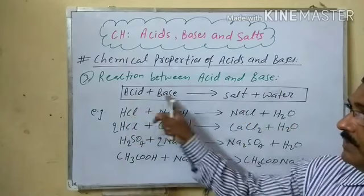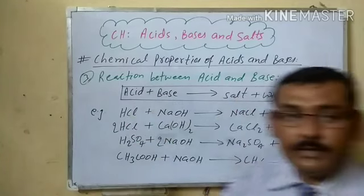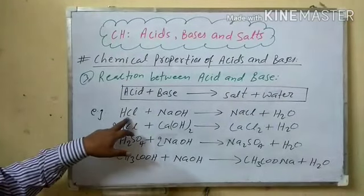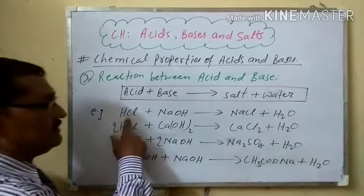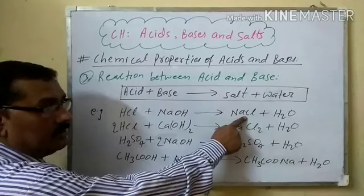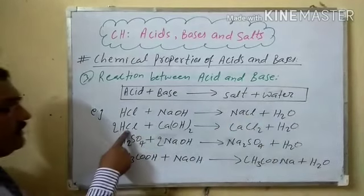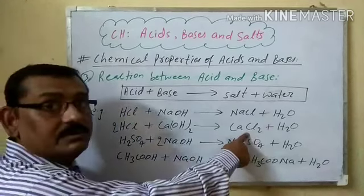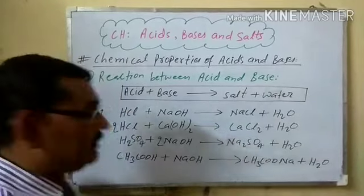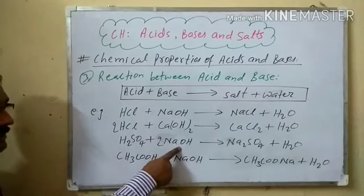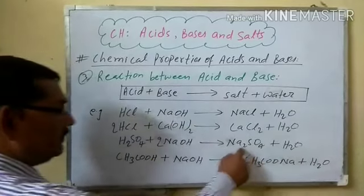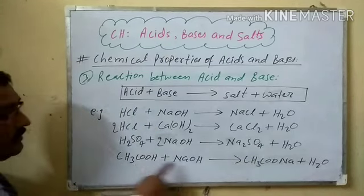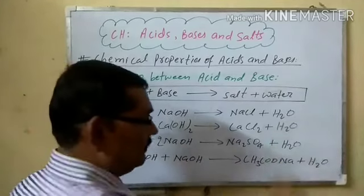You can take any acid and any base. For example: hydrochloric acid plus sodium hydroxide gives NaCl (salt) and water. Hydrochloric acid plus calcium hydroxide gives calcium chloride (salt) and water. Sulfuric acid plus sodium hydroxide gives sodium sulfate (Na2SO4) and water. Acetic acid plus sodium hydroxide gives sodium acetate and water.